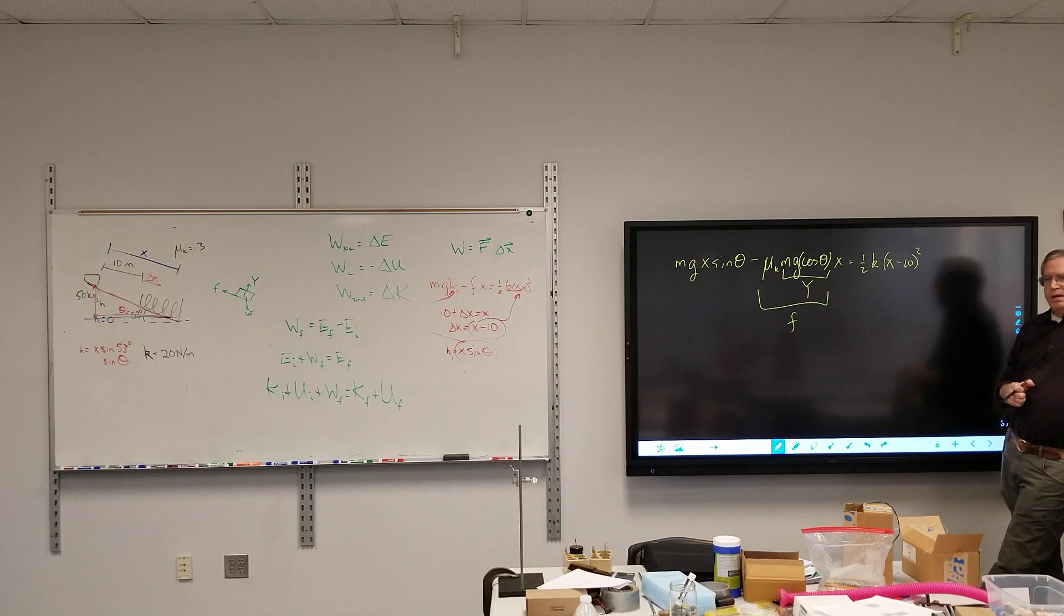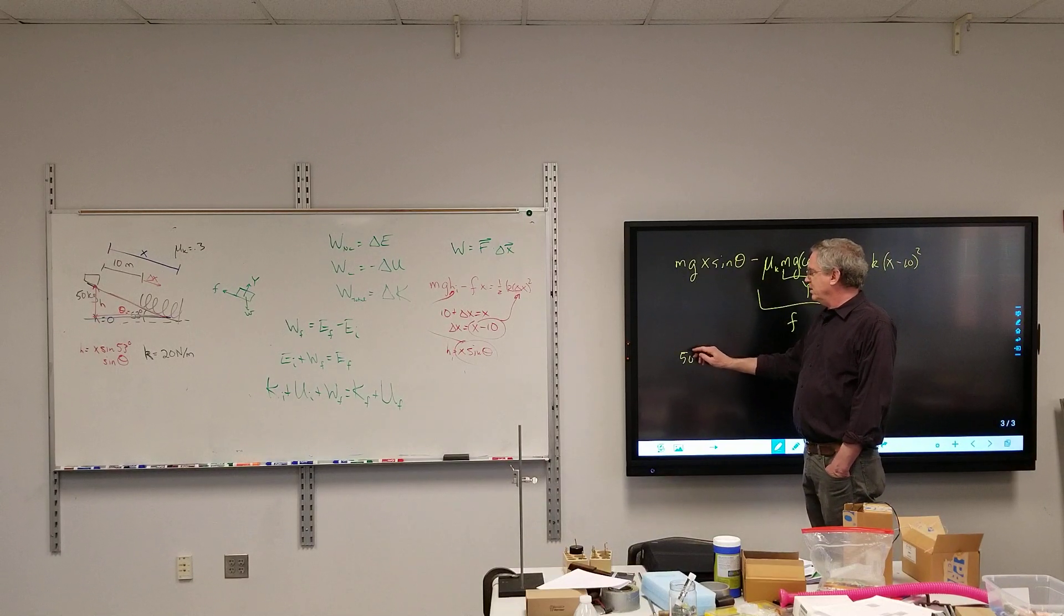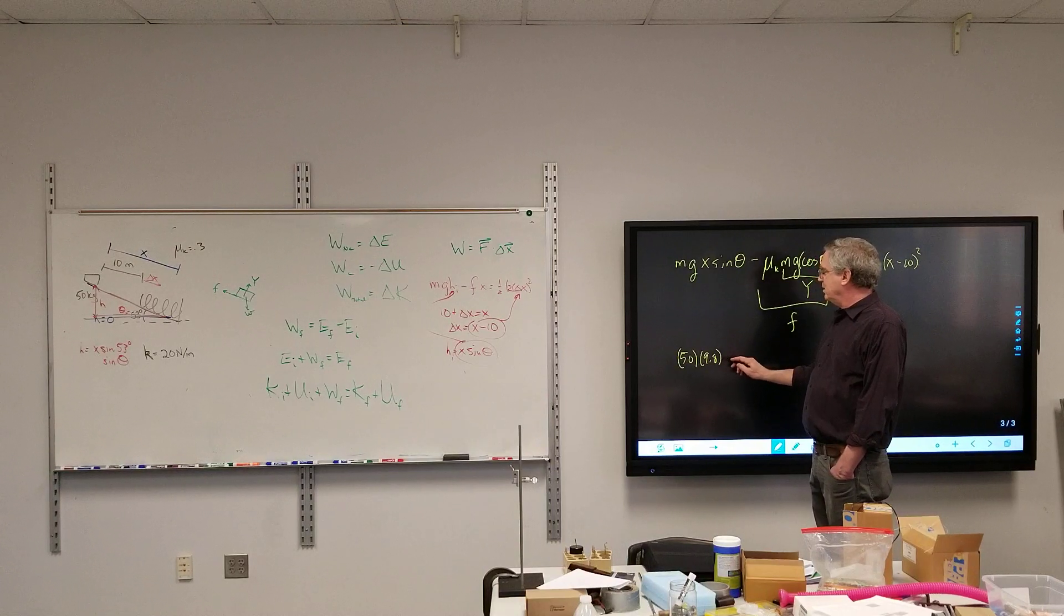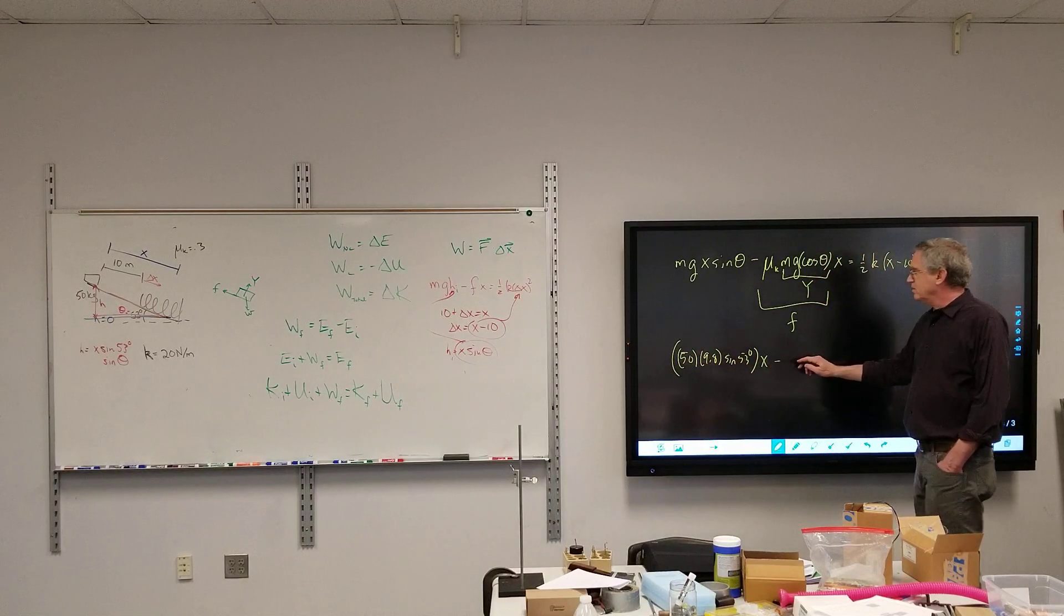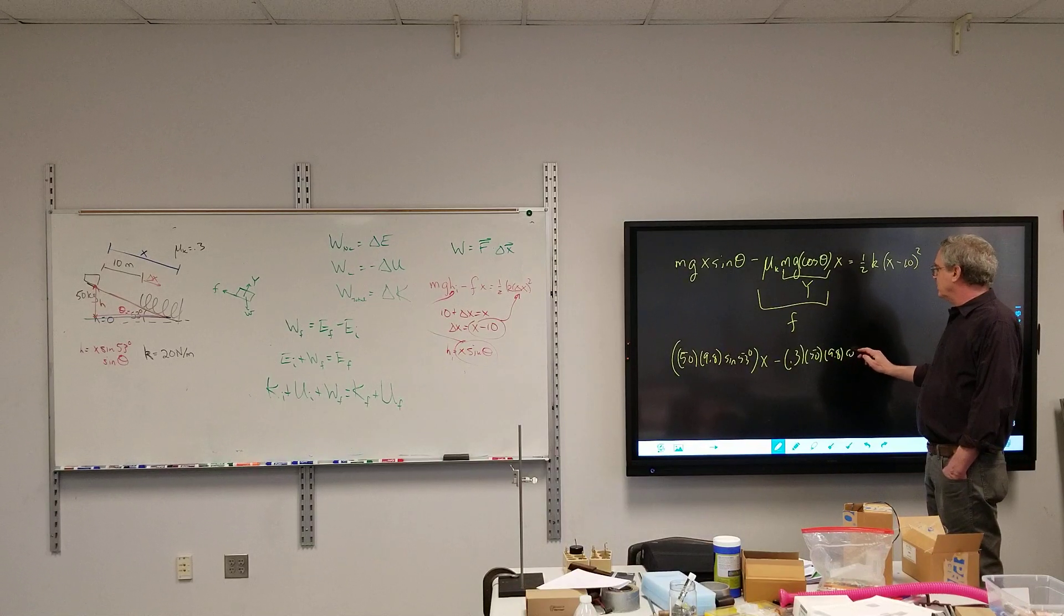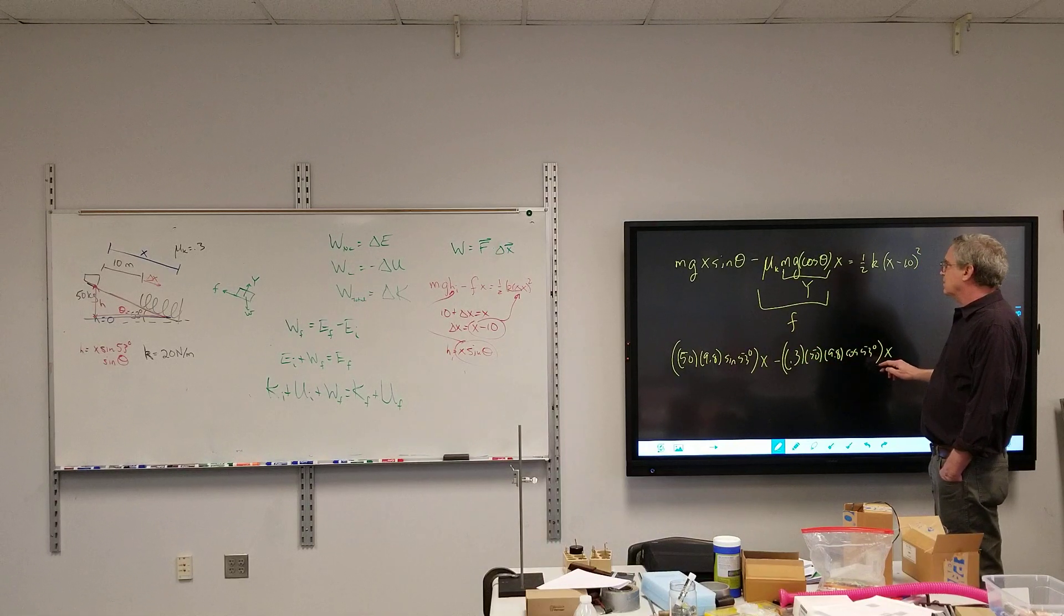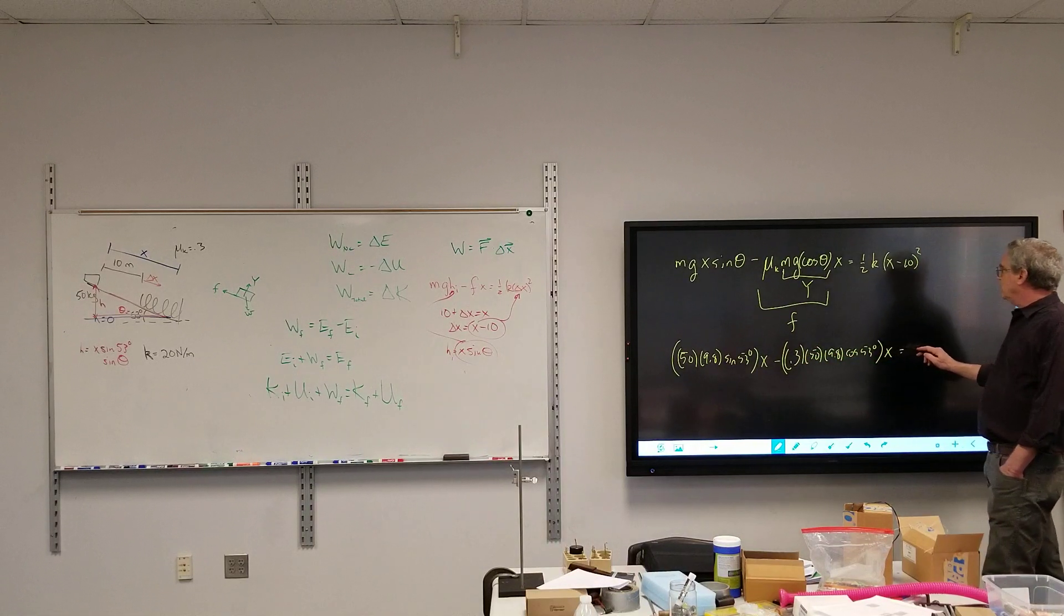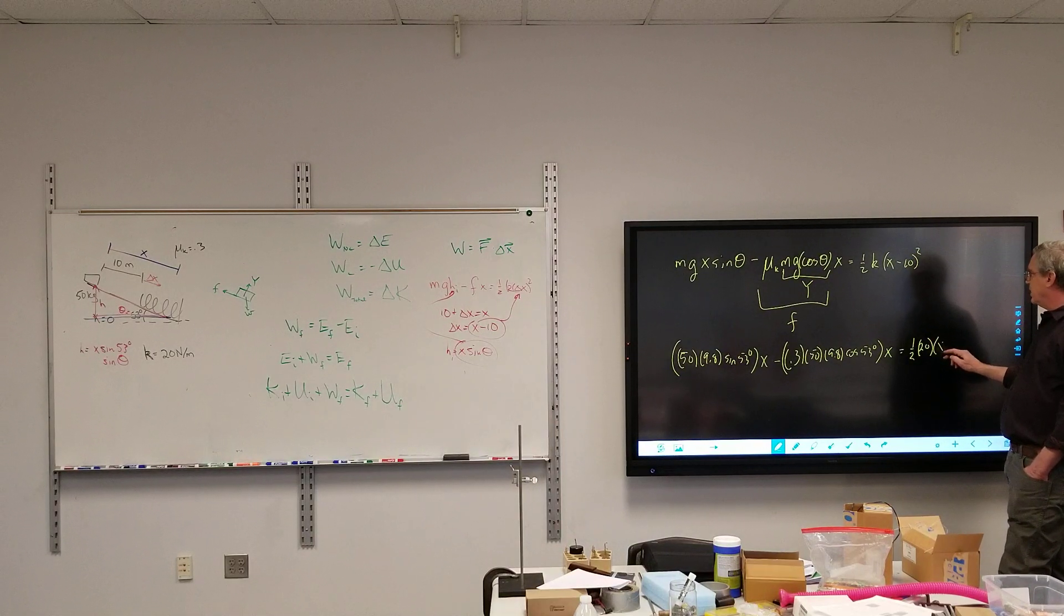Now do we just plug in our numbers? You can. Do you want to plug your numbers now? Yeah. So we have 50 times 9.8 times the sine of 53 degrees times x minus 0.3 times 50 times 9.8 times the cosine of 53 degrees times x minus 0.3 times 50 times 9.8 times the cosine of 53 degrees times x. And then this equals one half times 20 times x minus 10.